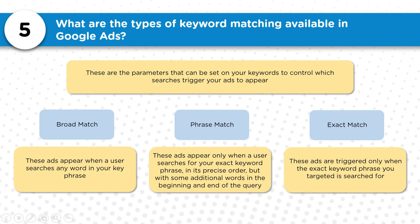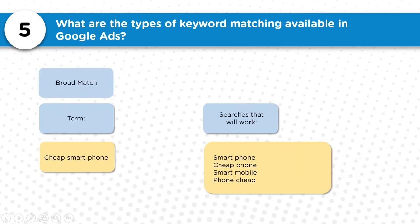Phrase match are ads that appear only when a user searches for that exact keyword phrase in the precise order, but with some additional words before or after the query. For example, if you're bidding on 'red Adidas running shoes,' someone could type 'looking for red Adidas running shoes in Portland, Oregon' and your ad would still show. Exact match keywords are triggered only when that exact keyword phrase is queried with nothing else added.